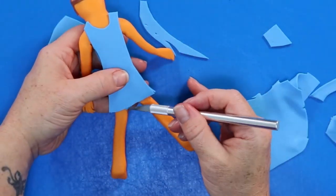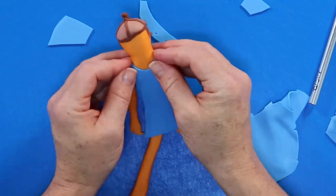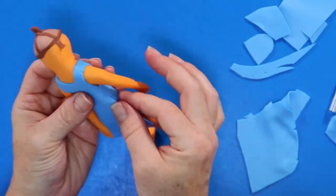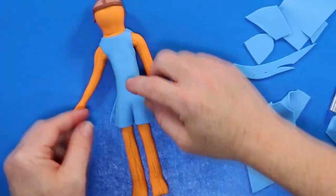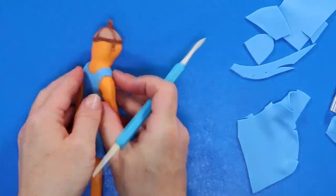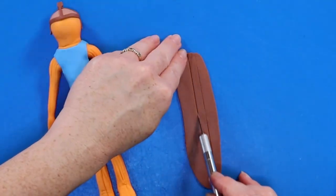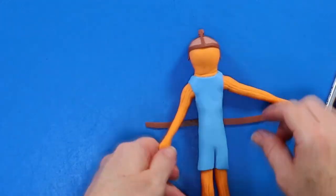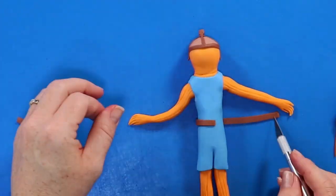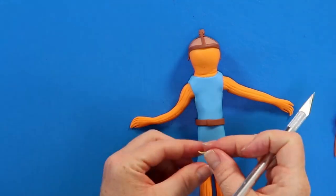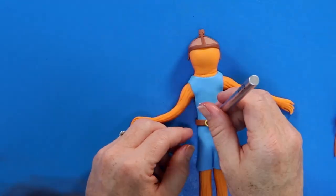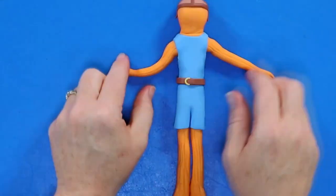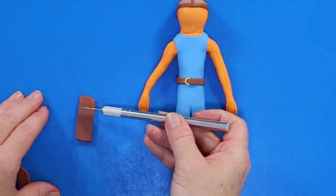So now that we have the main portion of his outfit finished, we need to add some smaller details such as his belt. So this is a utility belt and we're just gonna start by wrapping a little piece of brown fondant around his waist, giving it a little yellow buckle and then a couple of different size pockets to finish it off.